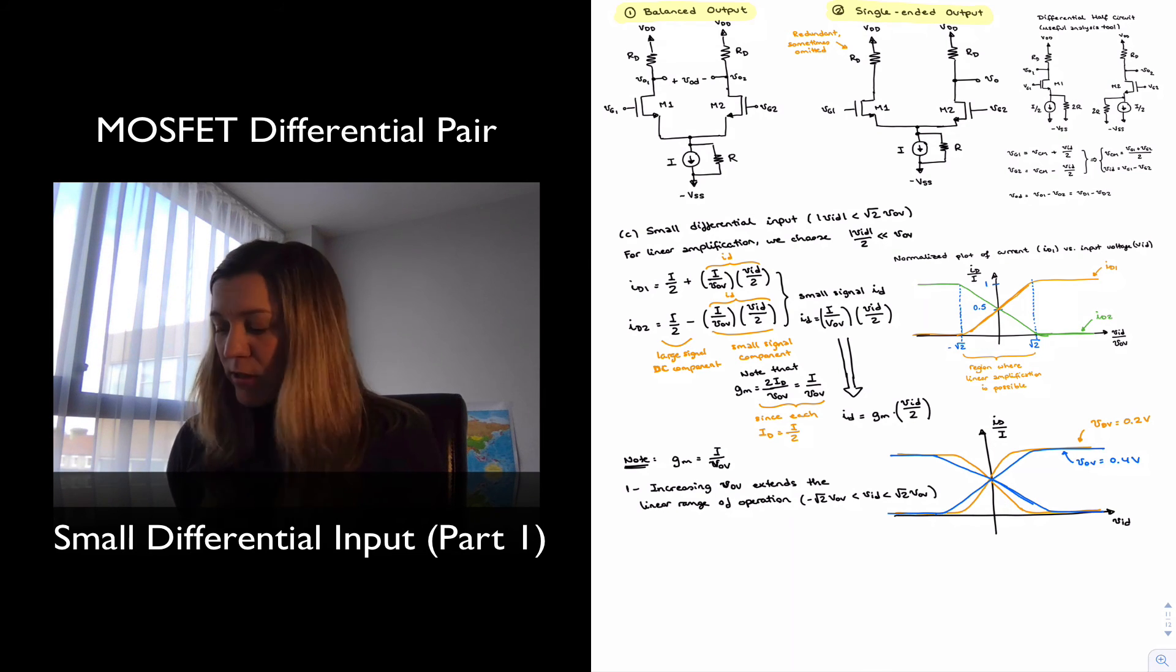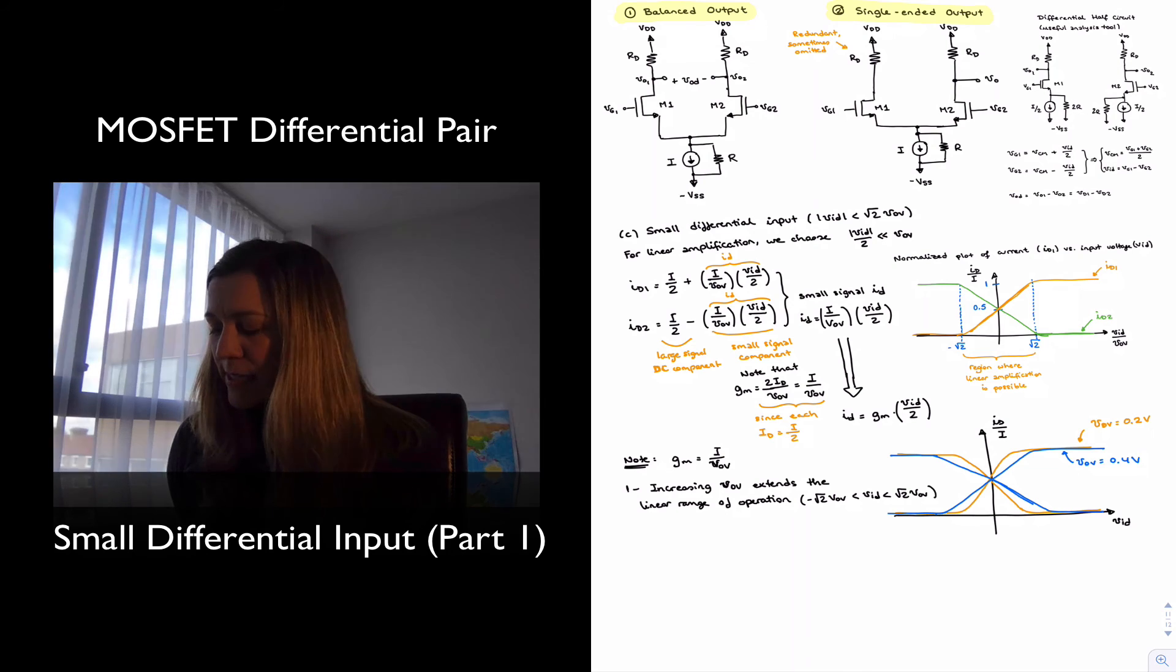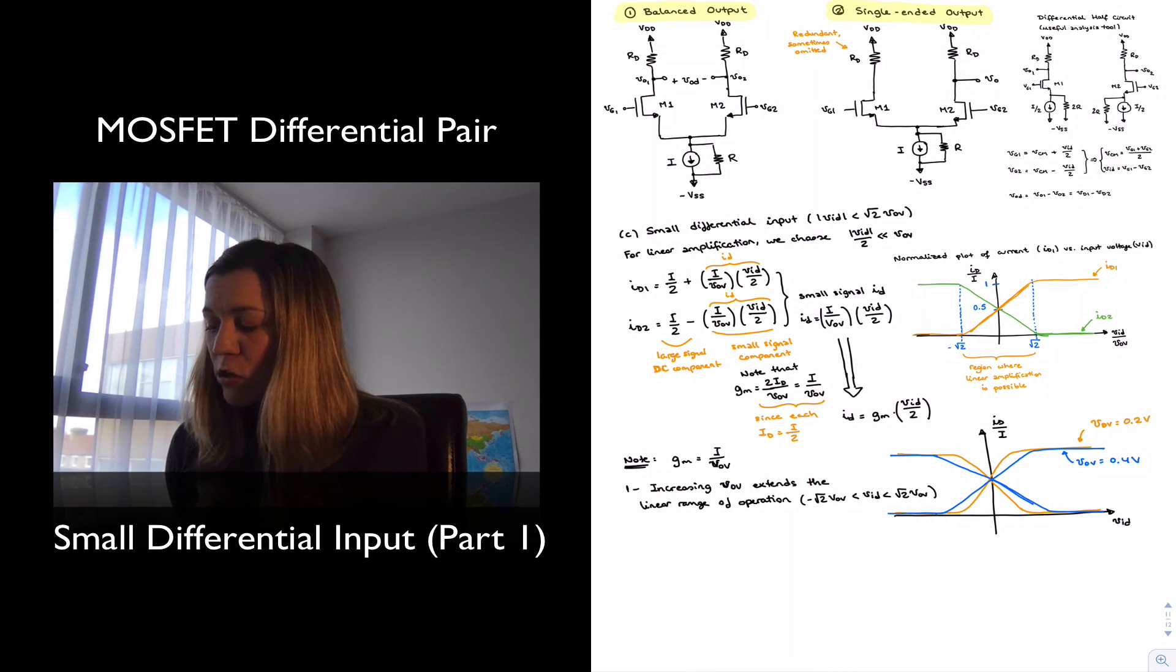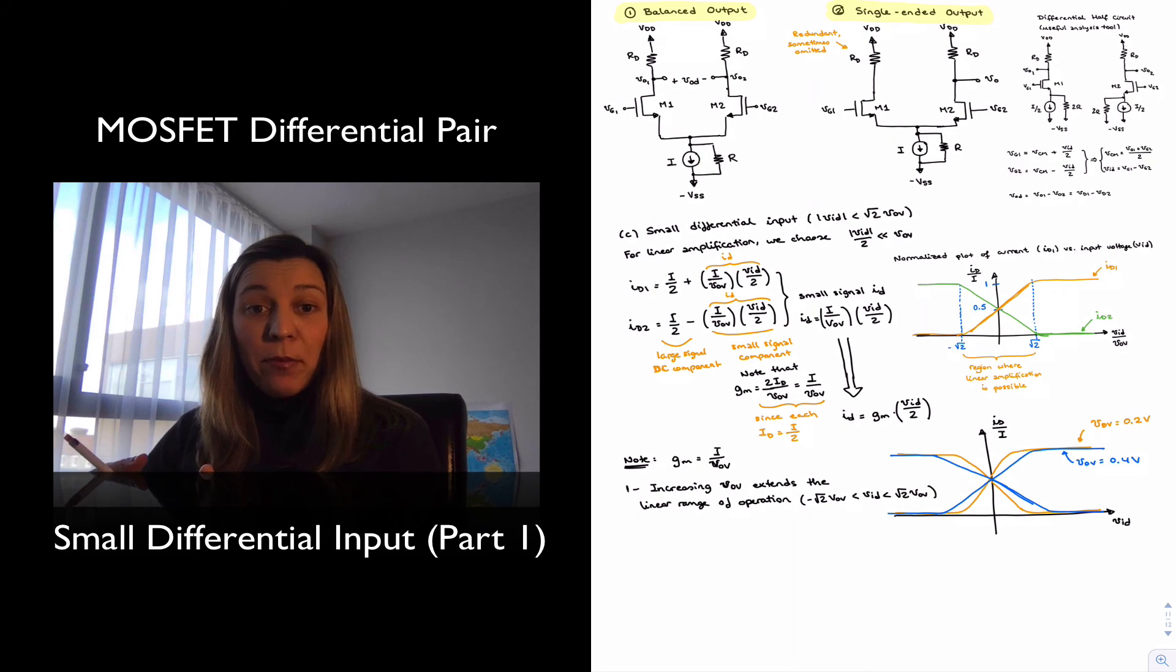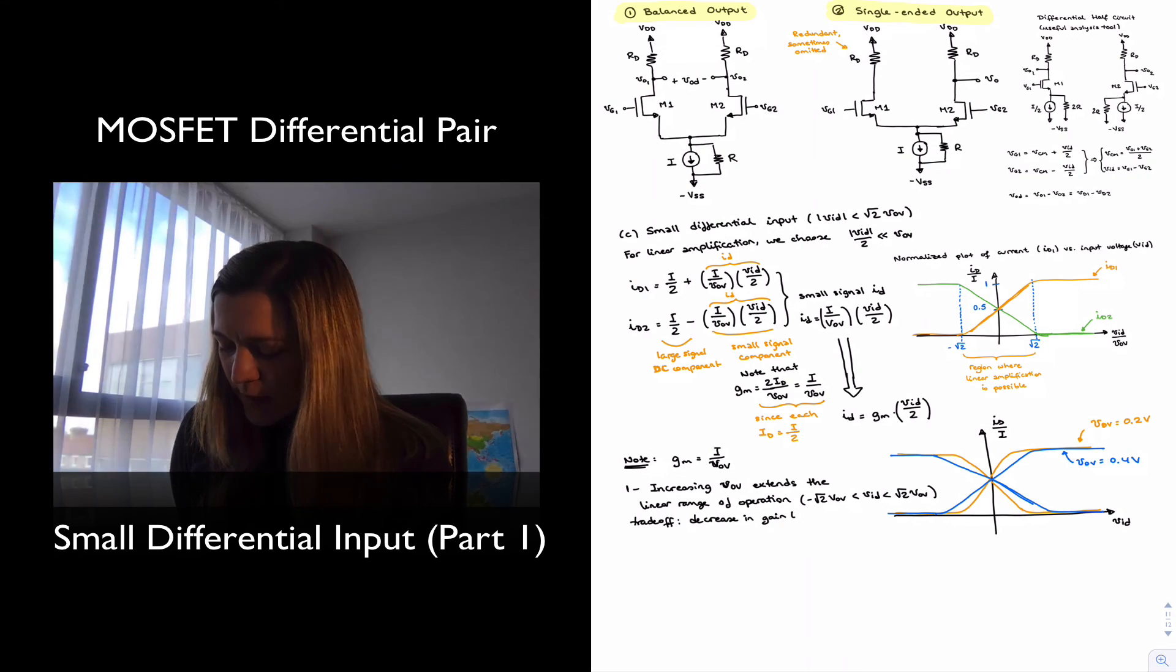So if I increase the denominator of that expression, then the overall expression, which is GM, it's going to decrease. And GM is related to the gain. Again, it's a transconductance, but in the case of a circuit where the outputs are current and the input is a voltage, that's the gain of the circuit. And we can see that decrease in gain with a decrease in slope of those curves. Notice that for the larger value of VoV, my slope is smaller. And so the trade-off here is a decrease in gain. That is, GM decreases.